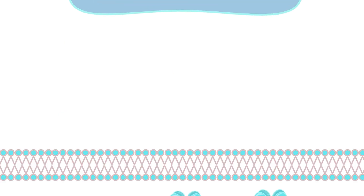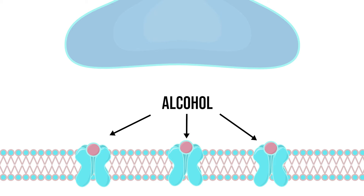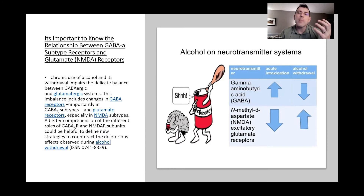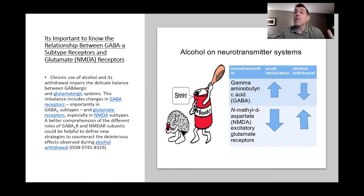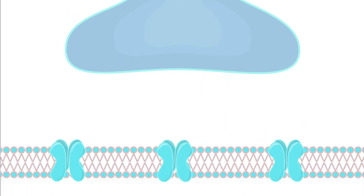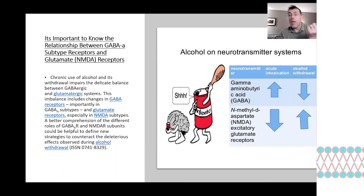With GABA receptors, if we activate them too much — say with excessive drinking — it'll cause a depressed mental state at first. But remember that our bodies are constantly adapting to our environment. So if we continue to drink, our body is going to do everything it can to try to stay awake. On the GABA side, it's going to decrease the number of GABA receptors to simply make it harder for that amount of alcohol in our system to cause sedation.